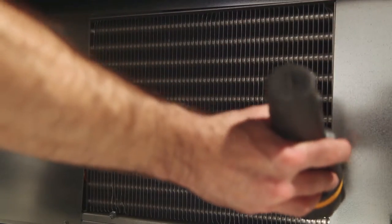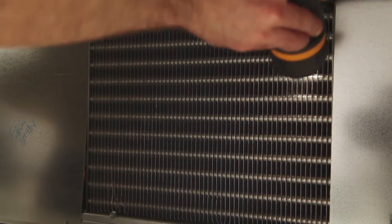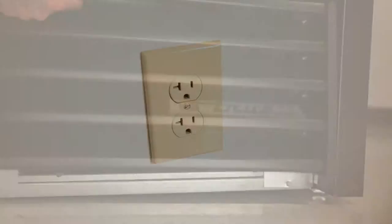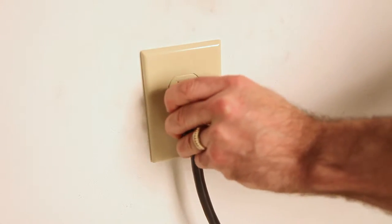Finally, shine a light through the condenser. You should now be able to see light on the other end, meaning the condenser is now free of debris. Then reinstall the grill. Connect the unit to the power and make sure the compressor is running.